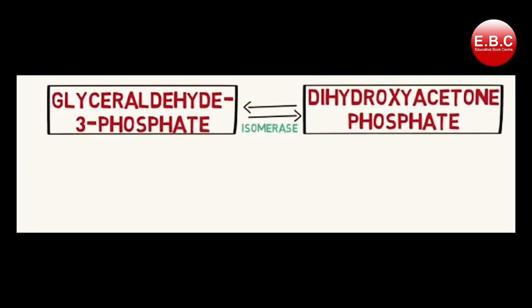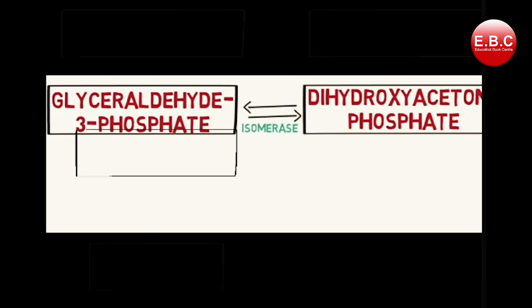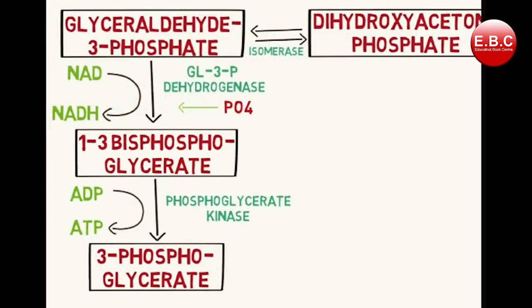The compounds glyceraldehyde-3-phosphate and dihydroxyacetone phosphate are actually isomers and can be interconverted by the enzyme isomerase. Since glyceraldehyde-3-phosphate is first utilized in glycolysis, the equilibrium of this isomerization reaction is always towards glyceraldehyde-3-phosphate. Also keep in mind that one molecule of glucose is split into two molecules, so every reaction of the second phase happens twice and produces twice the product. Now moving towards the second phase.